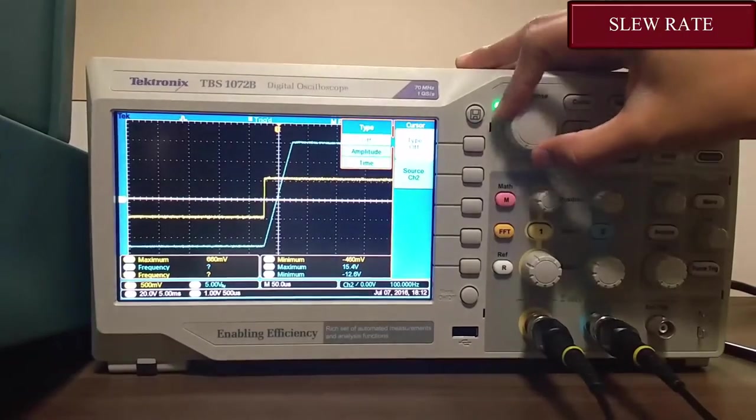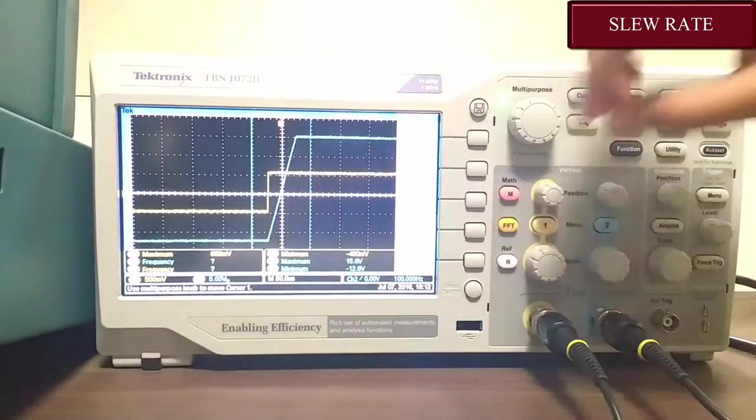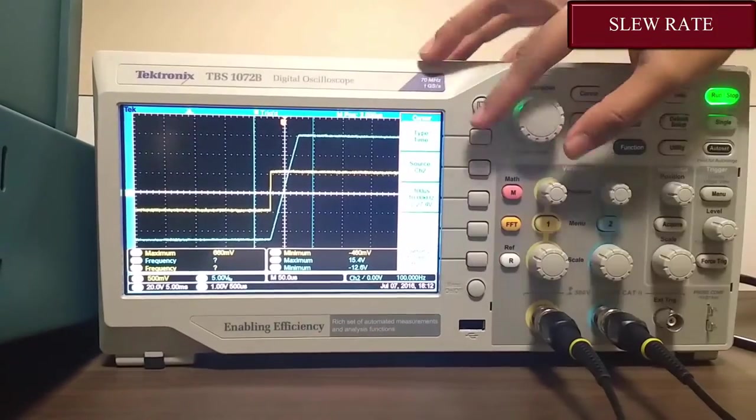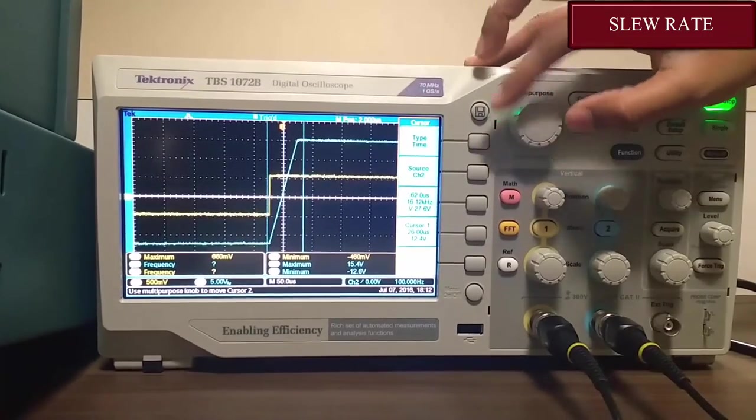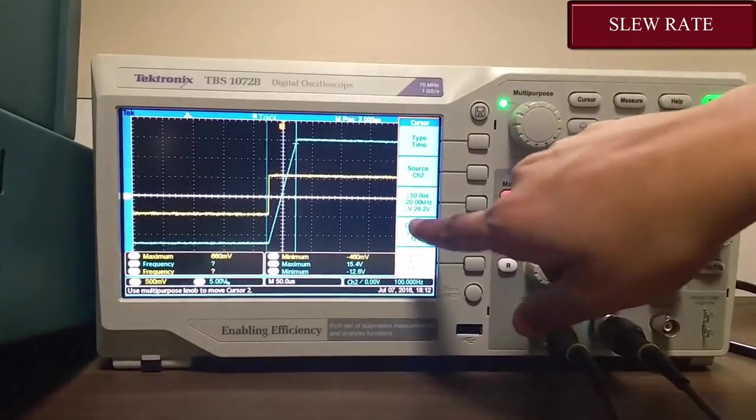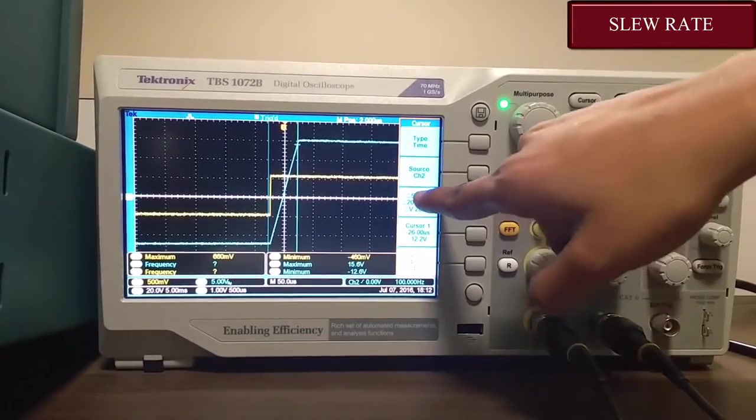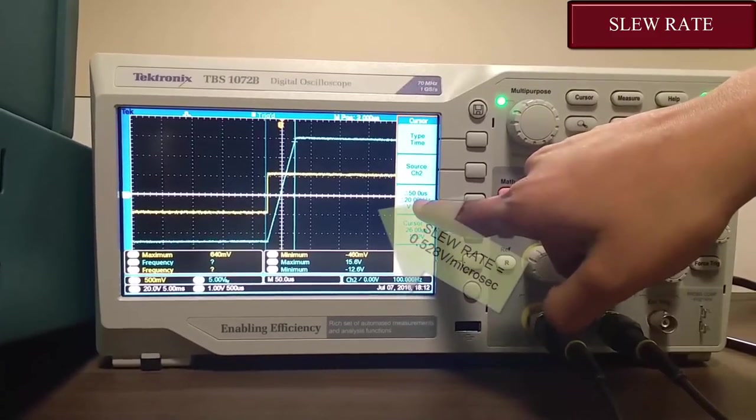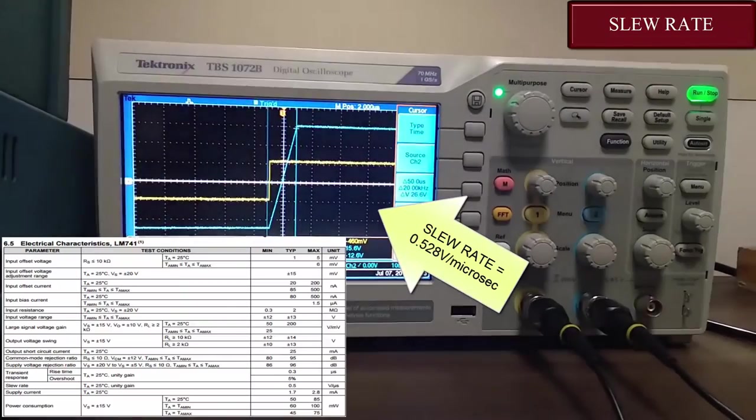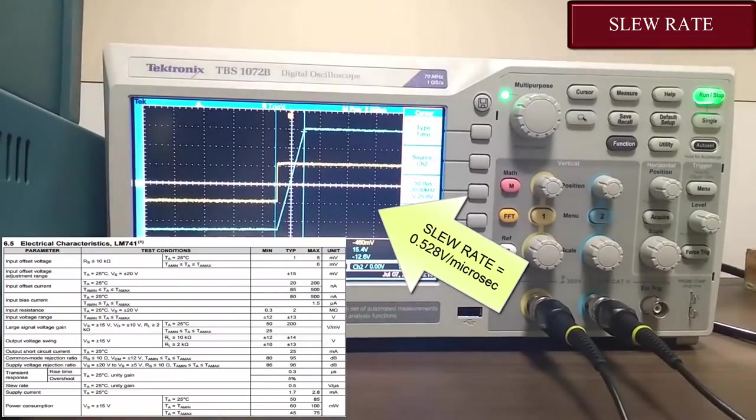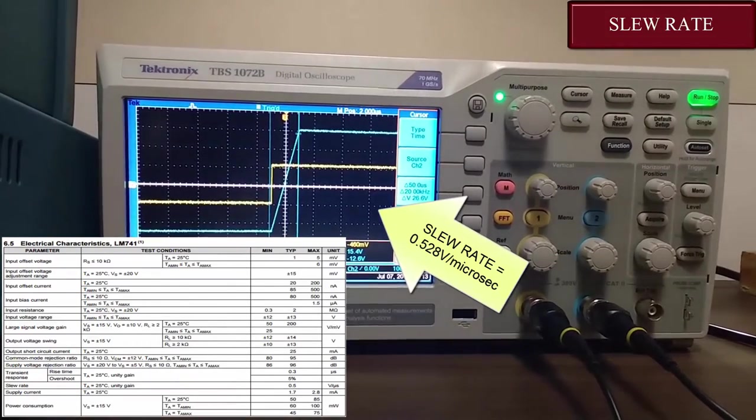After setting it you can see there are two cursors. Now I am moving the first cursor here and second cursor here. Now as you can see, the change in voltage is 26.4 volts and change in time is 50 microseconds. That is 0.528 volts per microsecond. As you can see in this data sheet, the slew rate for IC741 is 0.5, so we have already got the proper slew rate.